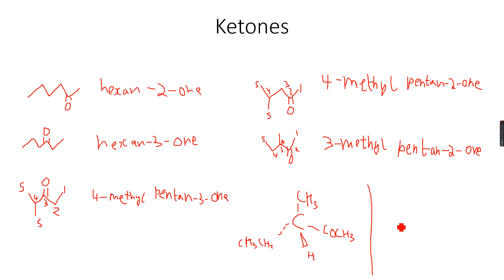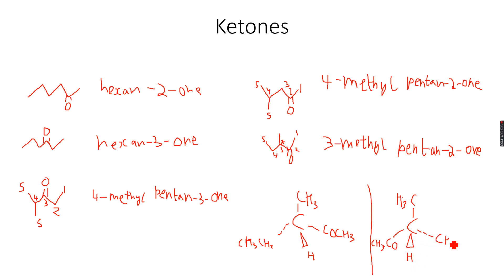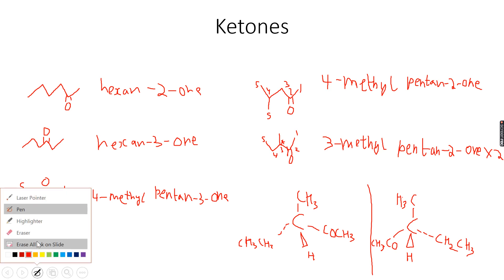So we will have an optical isomer of this compound. If you draw the mirror image, you can see that they are non-superimposable mirror images — again, optical isomers. This structural isomer will be multiplied by two because there are two stereo isomers for it.